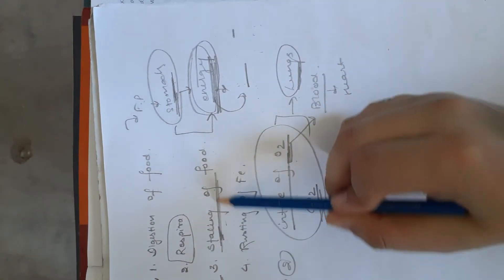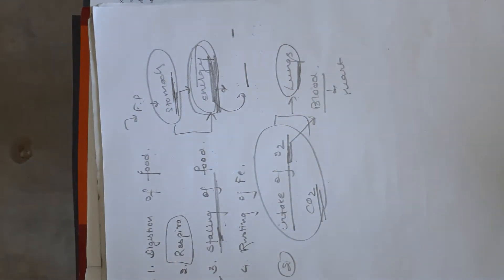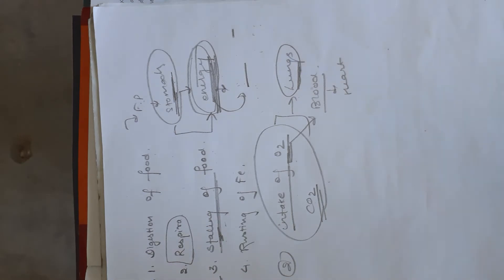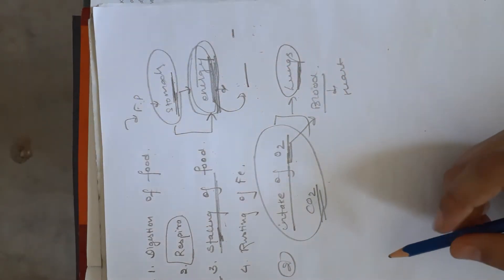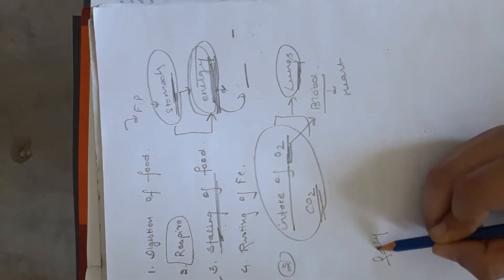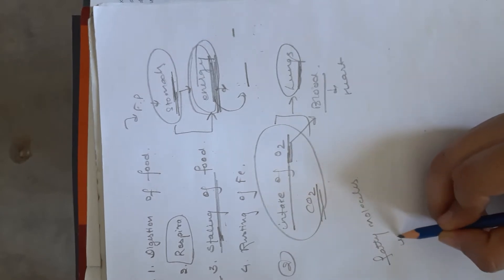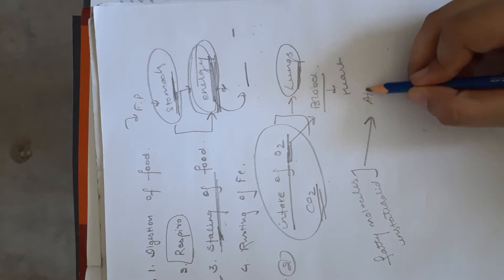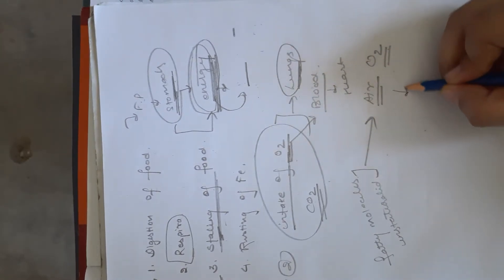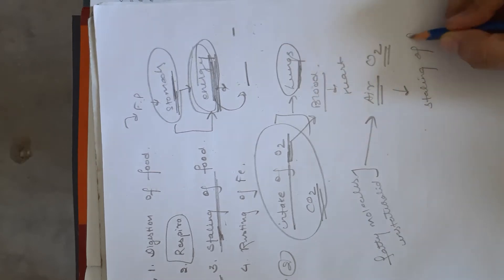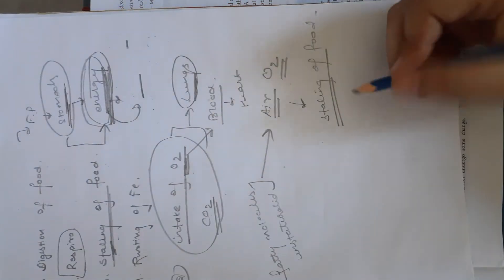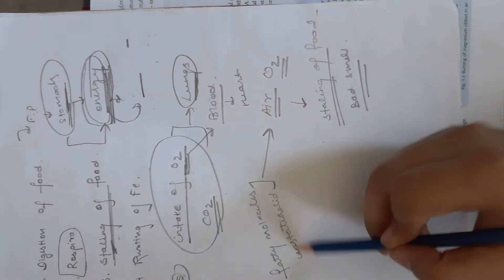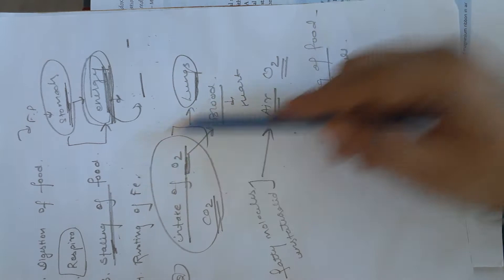Same as staling of food. If we put food aside from the refrigerator, it starts producing an awful or bad smell. Why? Because every food molecule contains fatty molecules, also called unsaturated molecules, which can easily react with air — that is, oxygen — and it starts producing a staling smell. Staling of food means bad smell. Some kind of chemical reaction takes place in the food, producing that bad smell.